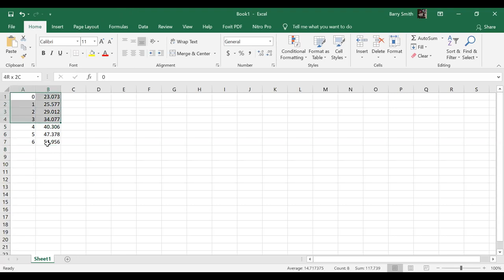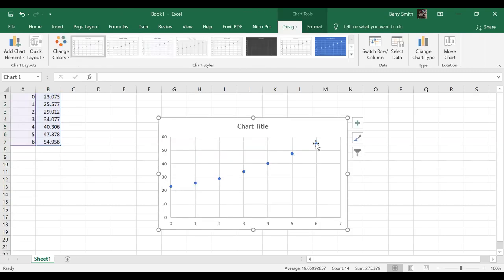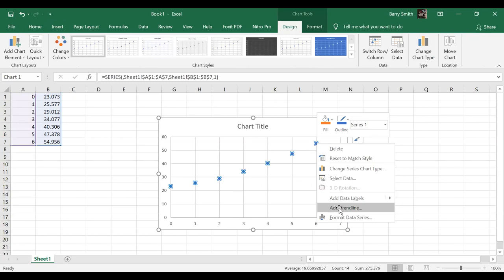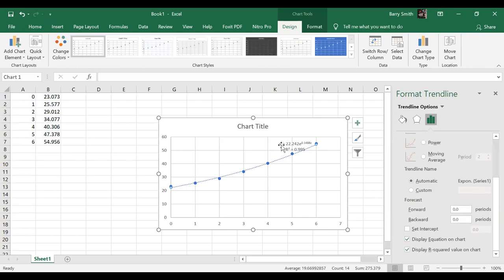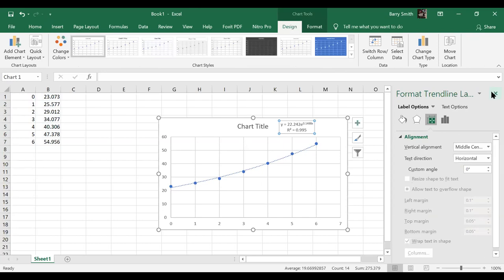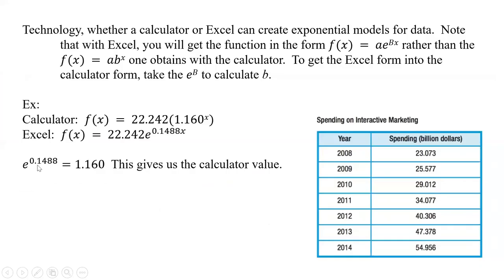So now what we have to do is we have to graph it. So we highlight it, insert, and we're going to do a scatter plot. And again, we see that it has a nice curve up. So what we're going to do now is we're going to right click on one of the dots, add trend line. And not linear this time, we want to have exponential. So we'll go to the top one, and let's display the equation and our r squared value. And so that now is what we have. Notice we have 22.242, which is what we had with the other one. But now we have this e to the 0.1488. So e to the 0.1488 gives us 1.160, and that is the same thing as our calculator spit out.